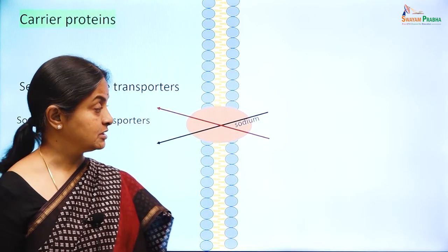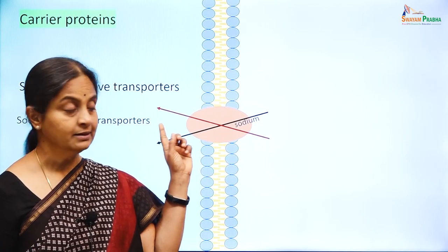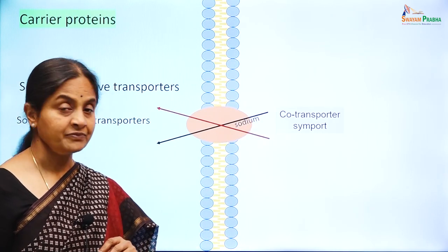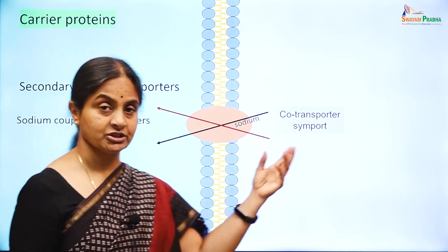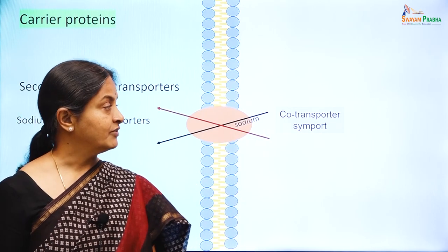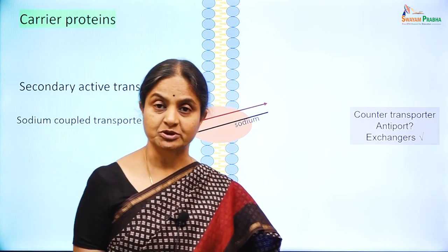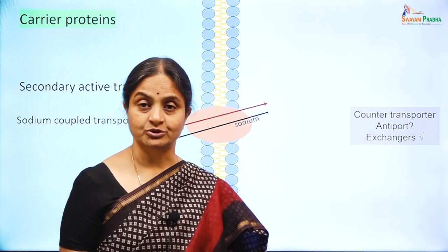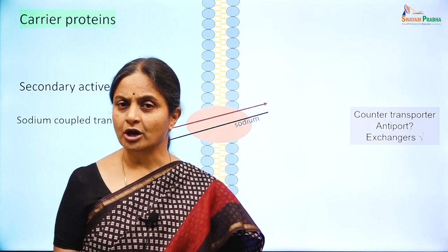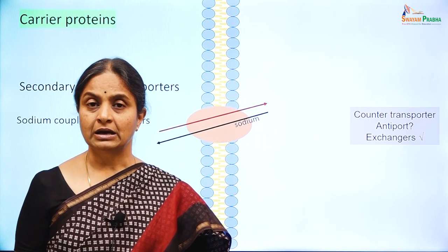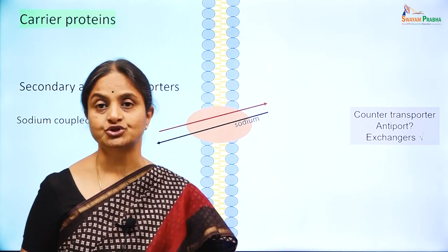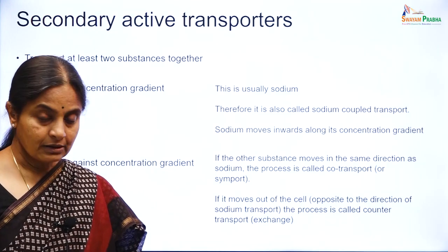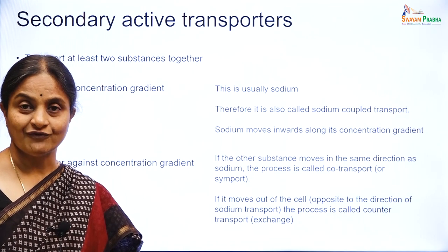If the other substance which moves uphill goes inward into the cell — in the same direction as sodium — we call the process co-transport or symport. Whereas if the second substance which moves uphill moves outward, in a direction opposite to sodium, we call the process counter-transport or antiport. It is better to use the term exchanger to refer to sodium counter-transport.